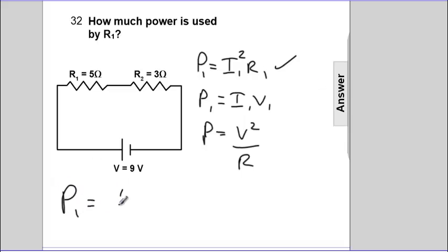Power 1 is I1 squared times R1. So we end up with 1.125 amps quantity squared times what R1 is, 5 ohms.